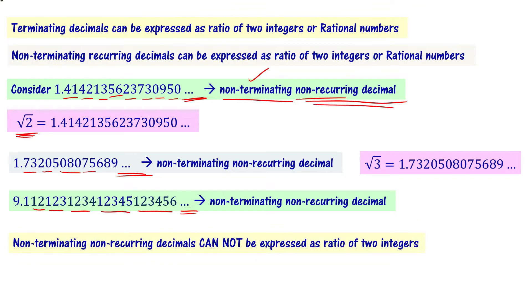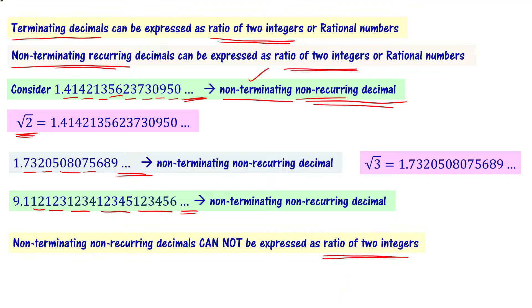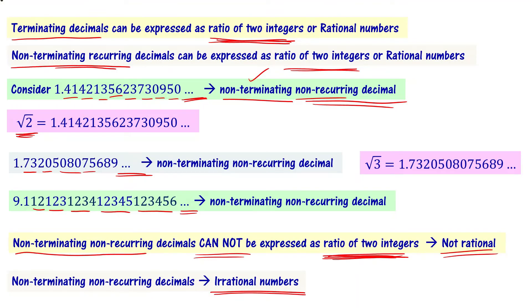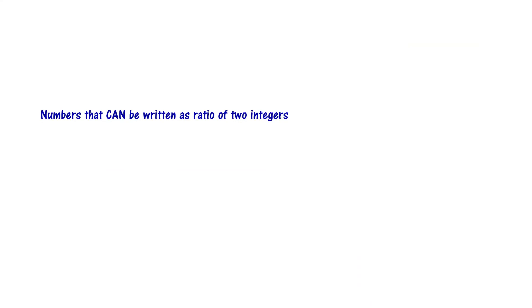These numbers cannot be expressed as ratio of two integers. Terminating decimals and non-terminating recurring decimals can be expressed as ratio of two integers. But non-terminating non-recurring decimals cannot be written as ratio of two integers — so these are not rational numbers. Since we cannot write them as ratio of two integers, these numbers are called irrational numbers — not rational. Mathematically, they are called irrational numbers.